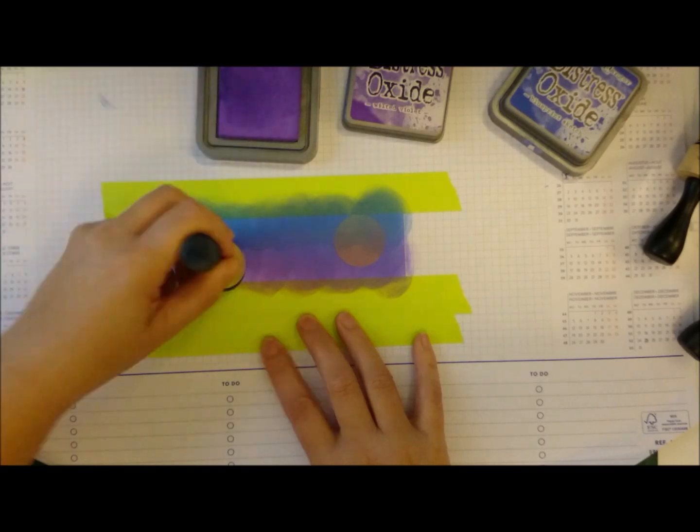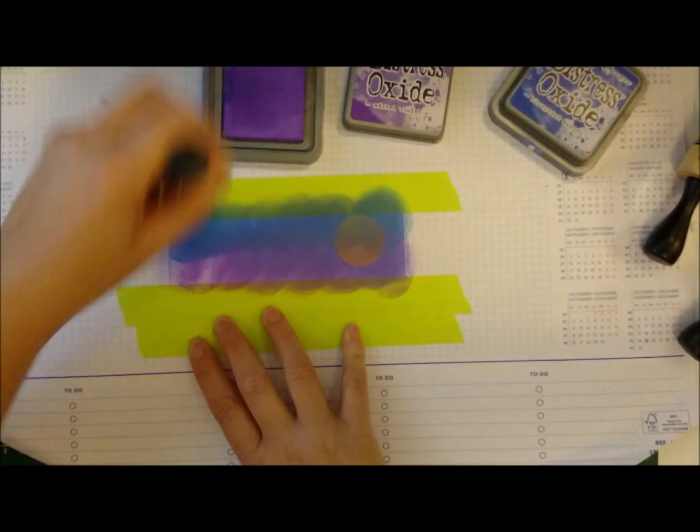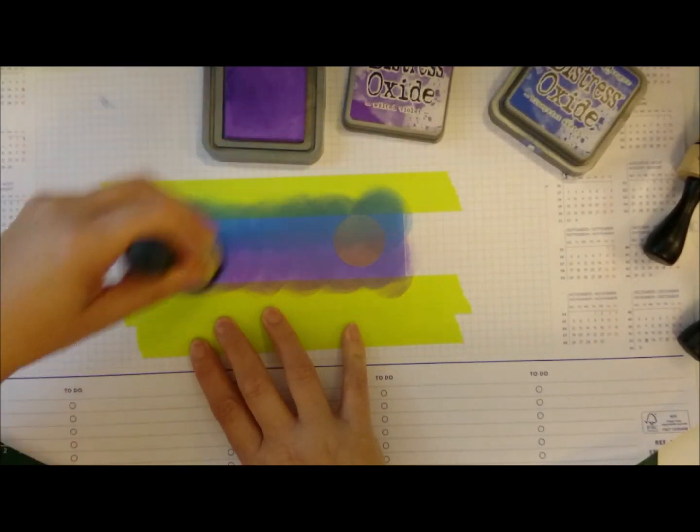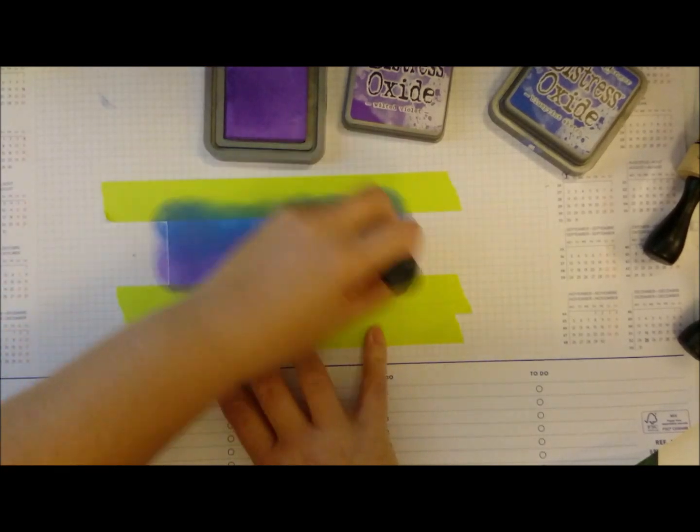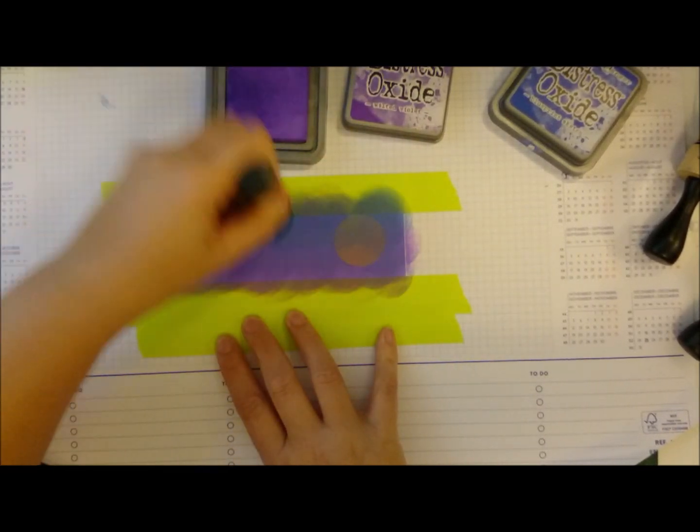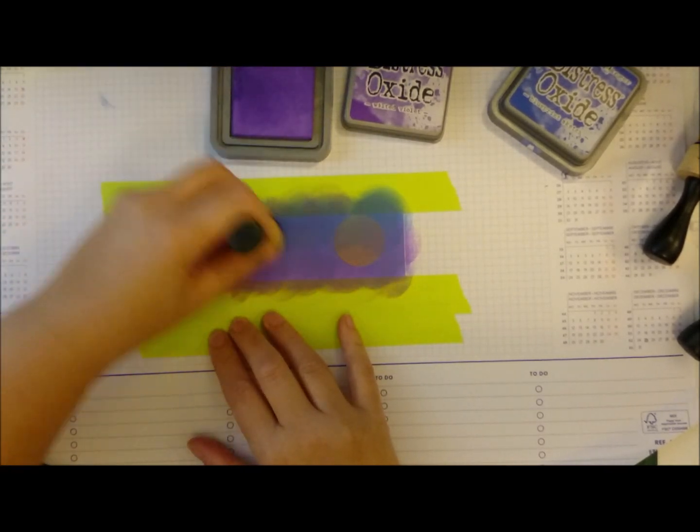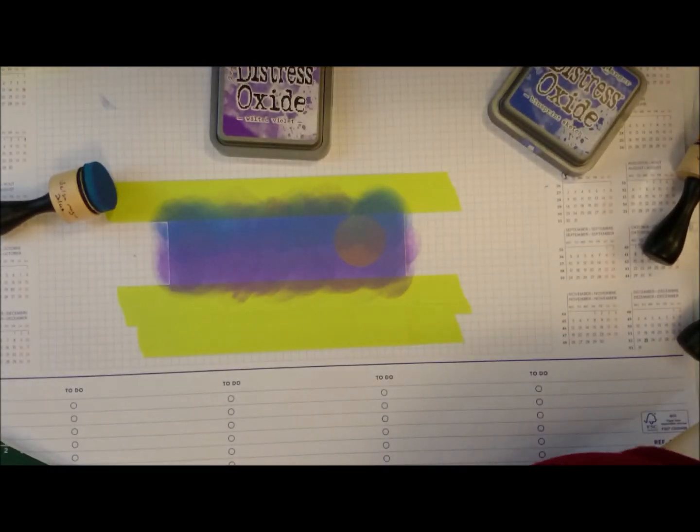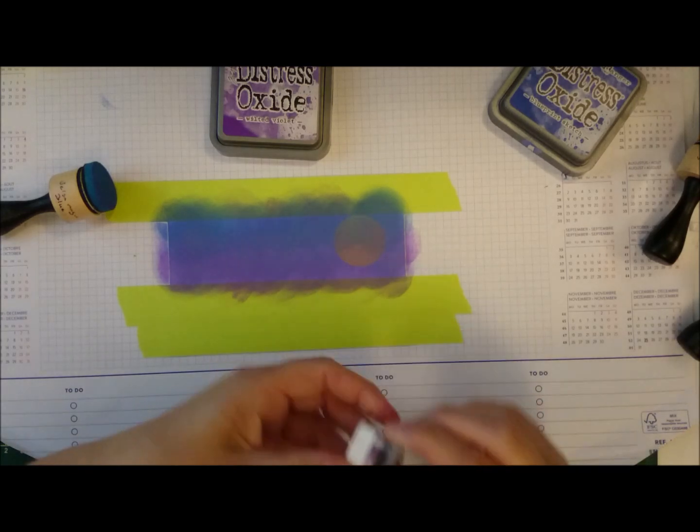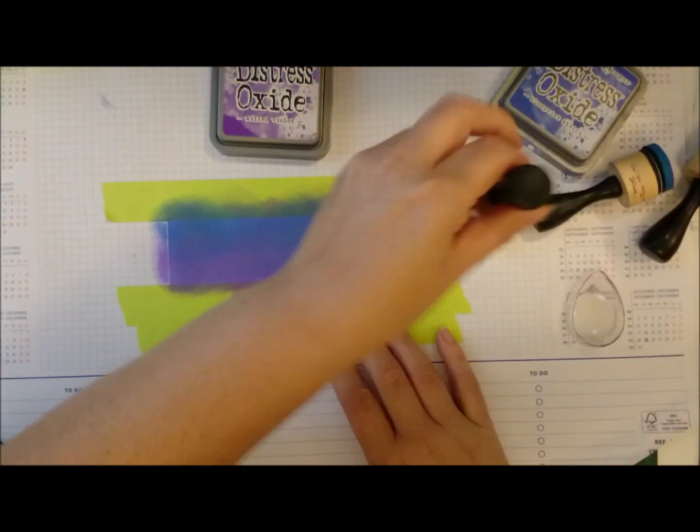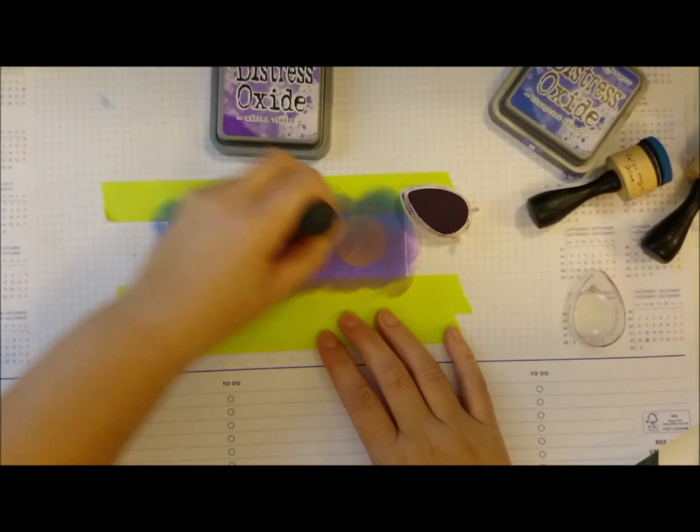I might end up printing a digi from Crafting Desert Diva that's a Batman and put him on top, and then maybe add a sentiment. But for now I'm going to leave it as a Halloween card, although I do not send out Halloween cards. Halloween is not big in the Netherlands.